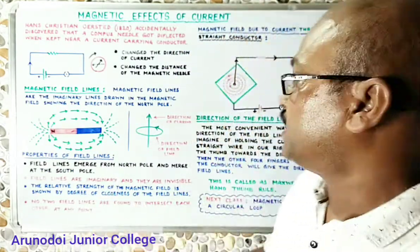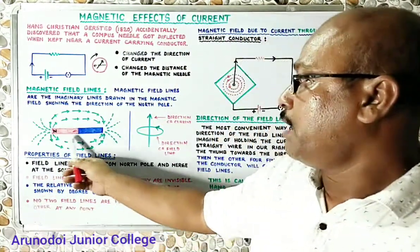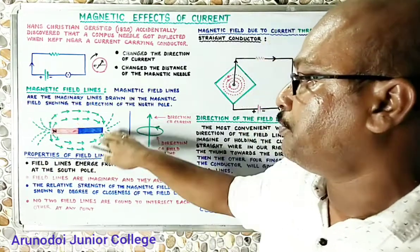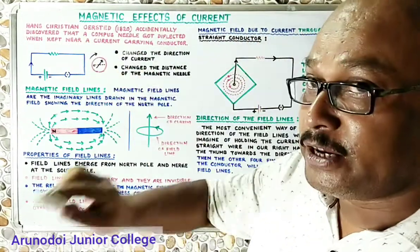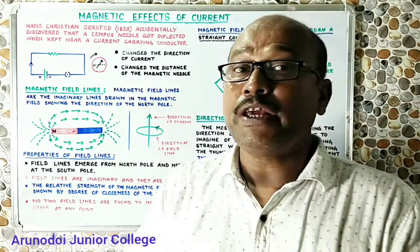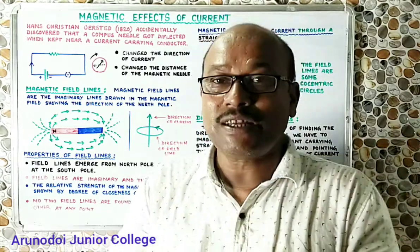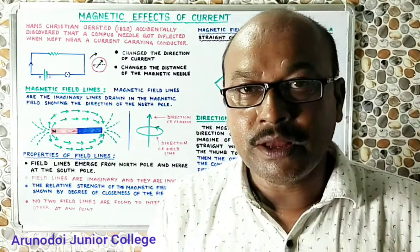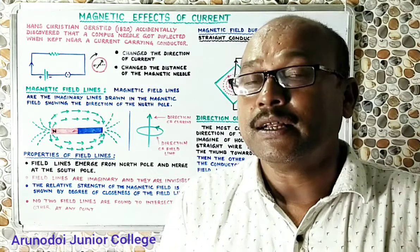Now we discuss the magnetic field due to a current-carrying conductor when the conductor is straight. We already know that a bar magnet has a magnetic field with magnetic field lines around it. Orsted found that when electric current passes through a wire, the wire starts behaving like a magnet. So the wire must also have magnetic field lines around it. What will be the shape of those magnetic field lines around a straight current-carrying conductor with no bends?